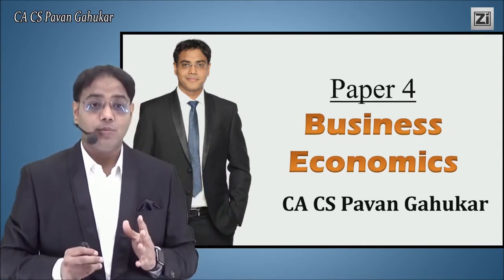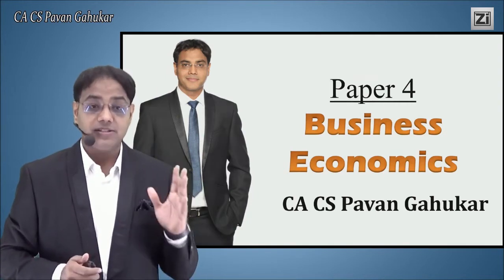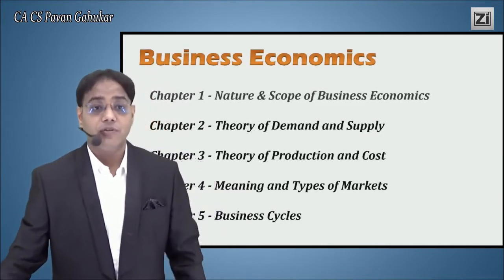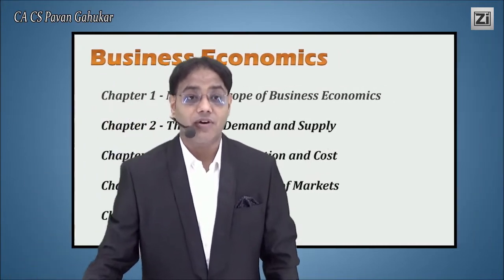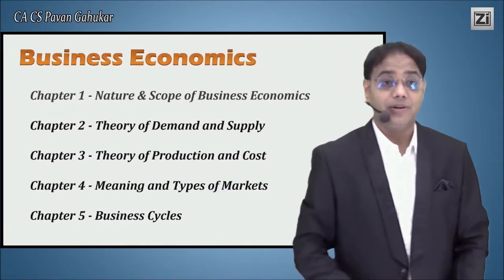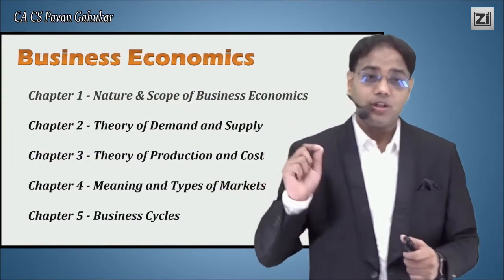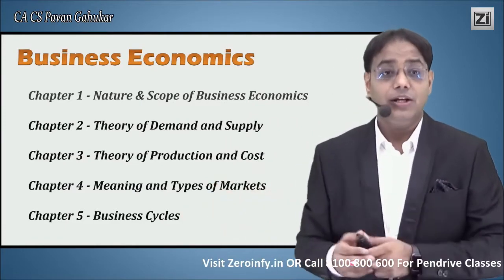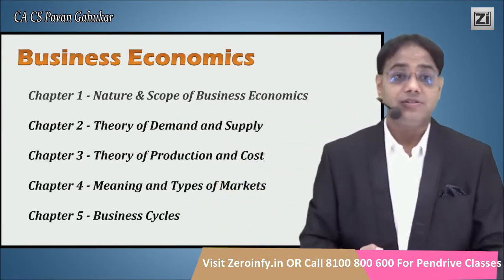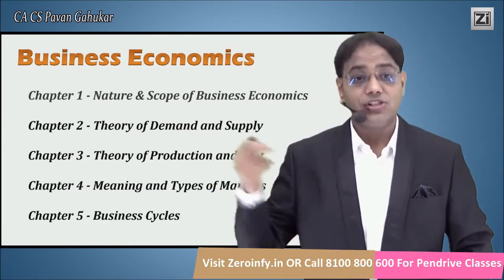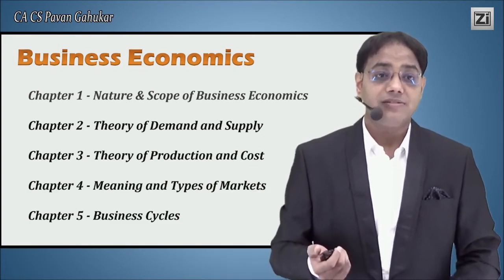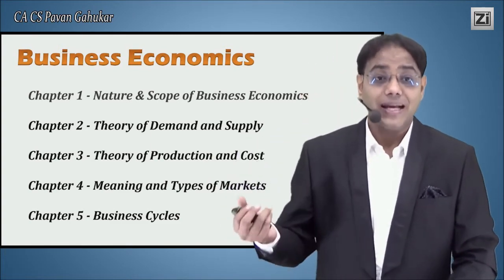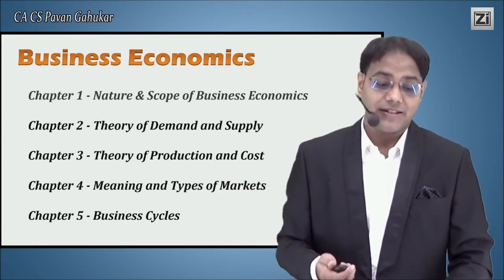Let's move straight to the point. CA Foundation has four subjects: Accounts, BCR Law, Logical Reasoning, Mathematics and Stats, and Business Economics. Today we are going to discuss Paper 4 — Business Economics. In Business Economics, we have five chapters: Nature and Scope of Business, Theory of Demand and Supply, Theory of Production and Cost, Meaning and Types of Markets, and Business Cycles.